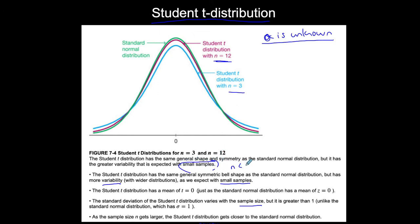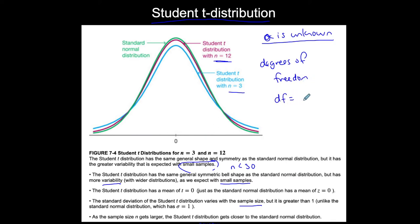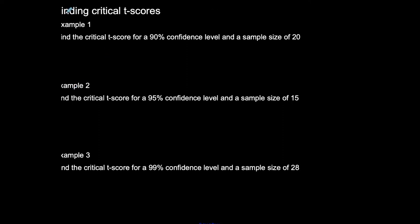Because the distribution varies depending on sample size, we have something called degrees of freedom (df), which is based on sample size. We find it by doing n minus 1, where n is the sample size. Now when you're on a Student t-distribution, you have to consider degrees of freedom. I want to show you how to find critical values.